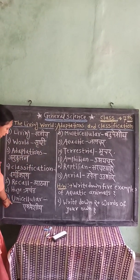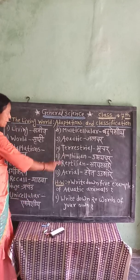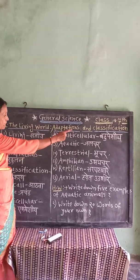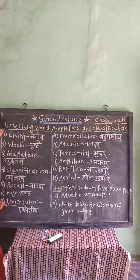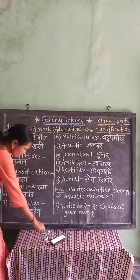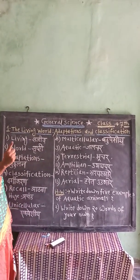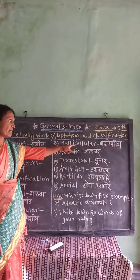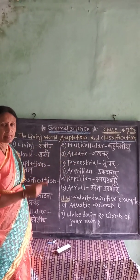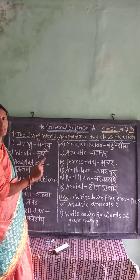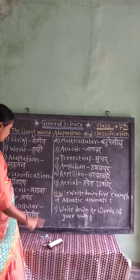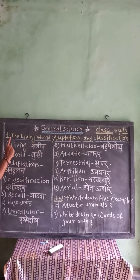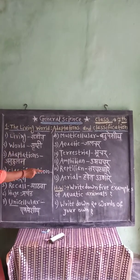Some animals are unicellular and some are multicellular. Uni means one — only one cell is present in a unicellular animal. Multi means many — many cells are present in a multicellular animal. Some animals are vertebrates and some are invertebrates.